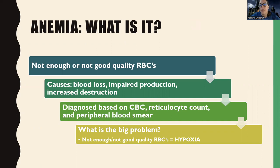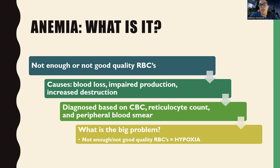Think of it like a factory — sometimes they're making something at mass supply, and sometimes the machine breaks down and it's not making enough, or sometimes it's making some but they're not turning out the product they need. The important thing to remember is: what is the point of red blood cells? Red blood cells are key to getting oxygen and nutrients to your tissues. If I have not enough or not good quality, I'm not going to get oxygen and needed nutrients to my tissues, which is a big deal because oxygen is the main nutrient you need to survive.